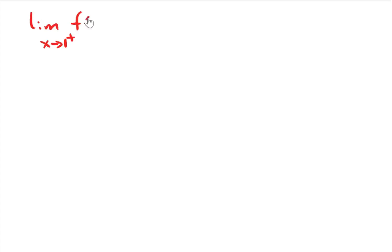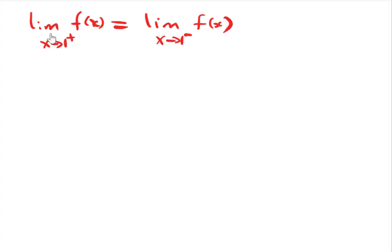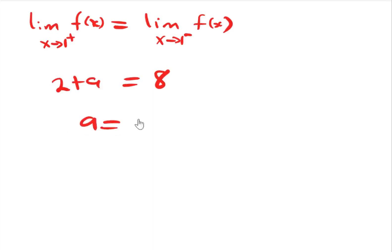We already know that for the limit as x tends to 1 to exist, the right hand limit must equal the left hand limit. We got the right hand limit to be 2 plus a and the left hand limit to be 8. Therefore, making a the subject of the formula, a equals 8 minus 2, which gives us 6 as our answer.